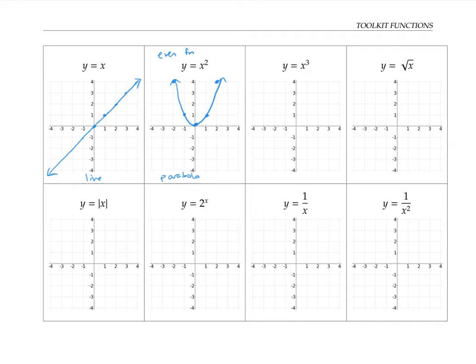The next function, y equals x cubed, I'll call that a cubic. Let's plot a few points. When x is zero, y is zero. When x is one, y is one. When x is negative one, y is negative one. Two goes with the point eight way up here, and an x value of negative two gives us negative eight. Connecting the dots, I get something that looks kind of like this.